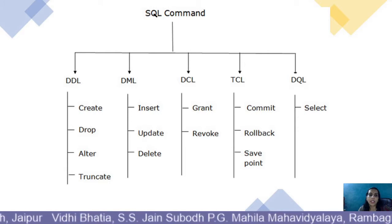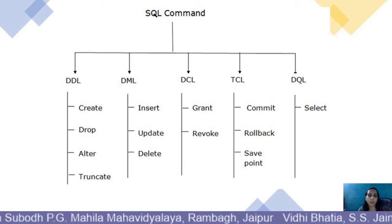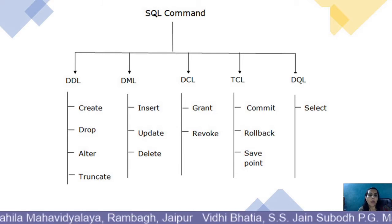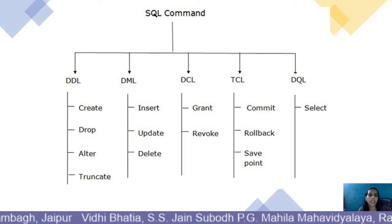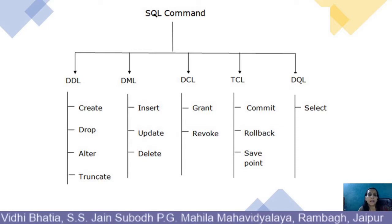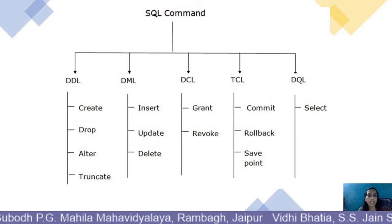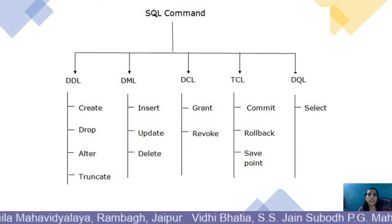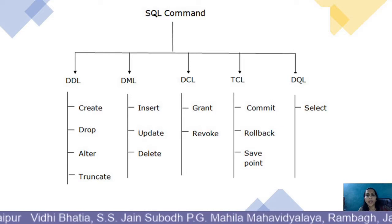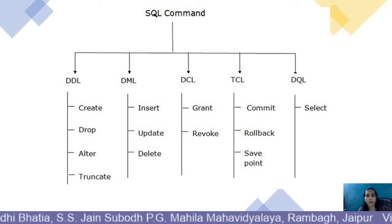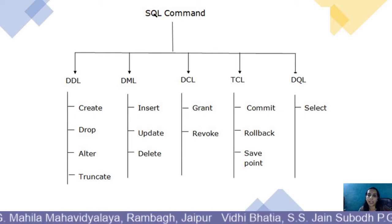The diagram shows DDL, DML, DCL, TCL, and DQL. Create, drop, alter, and truncate are the examples of DDL commands. In DML, insert, update, and delete commands are there. In DCL, grant and revoke. In TCL, commit, rollback, and save point. And in DQL, there is only one command, that is select.